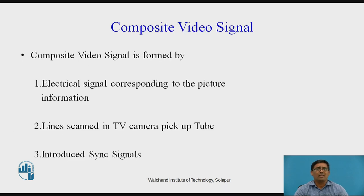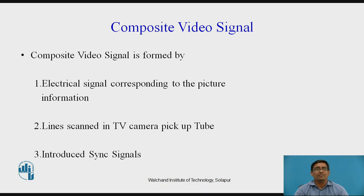The composite video signal is formed by the electrical signal corresponding to the picture information, which is line scanned in the TV camera pickup tube, and then the sync signal is introduced into it. This forms the composite video signal.